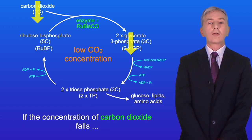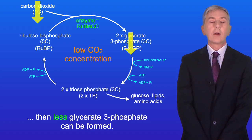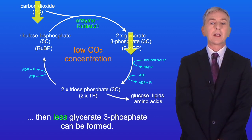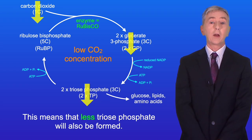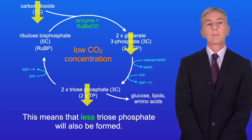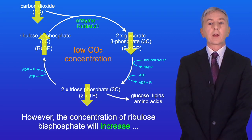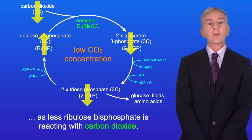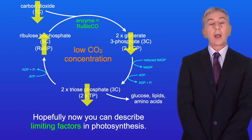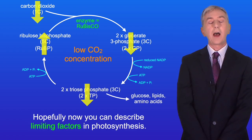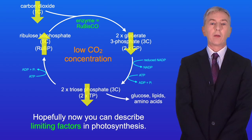If the concentration of carbon dioxide falls, then less glycerate-3-phosphate can be formed, meaning less triose phosphate will also be formed. However, the concentration of ribulose bisphosphate will increase, as less ribulose bisphosphate is reacting with carbon dioxide. So hopefully now you can describe limiting factors in photosynthesis.